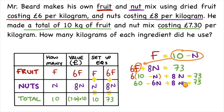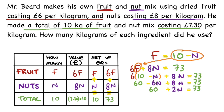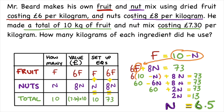I still have the plus 8N, all equal to 73. Now I can collect like terms: 60 and then minus 6N plus 8N gives me 2N, equal to 73. If I subtract 60 from both sides, I get 2N is equal to 13 — because 73 minus 60 is 13. Finally, if I divide both sides by 2, I get N is equal to 6.5.